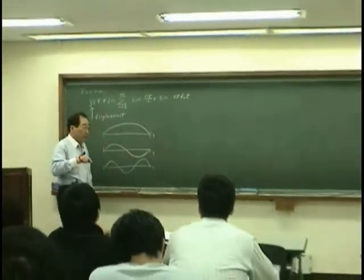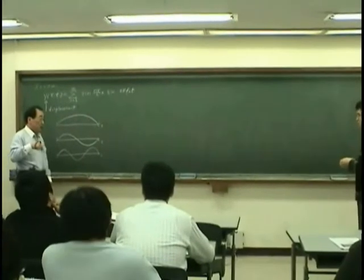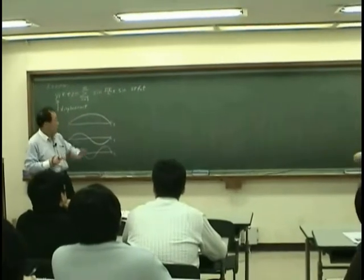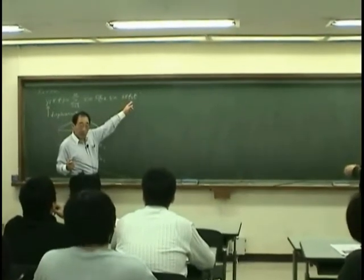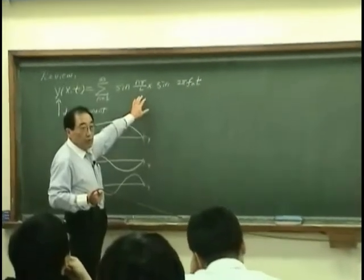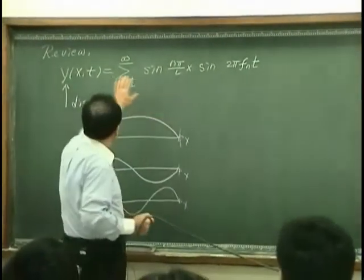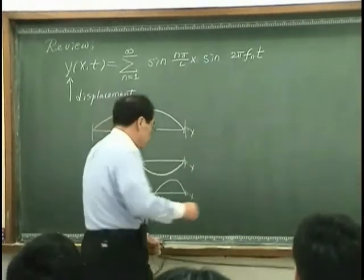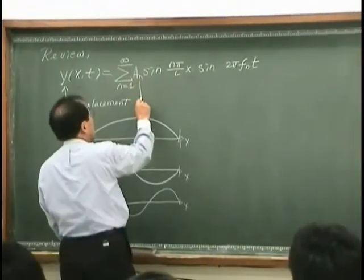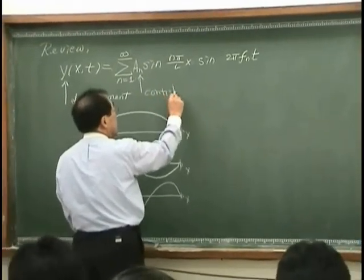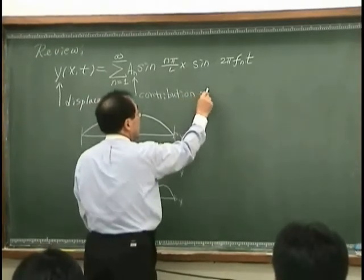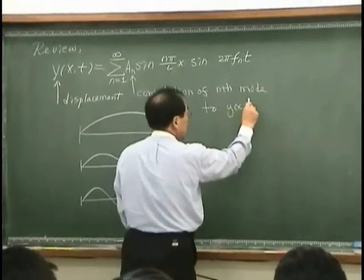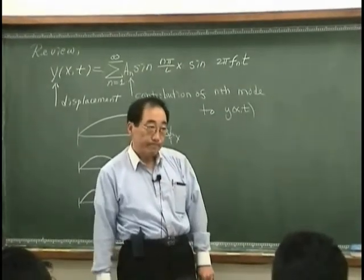And then if I go up more, then you will see more rapid variation in space as I oscillate the string more frequently. Fn goes up. So what this equation really argues is the following: any vibratory displacement can be expressed by summing up all these things and the contribution. That's what we learn.